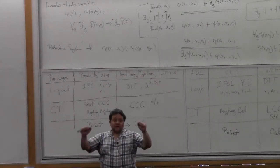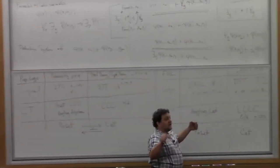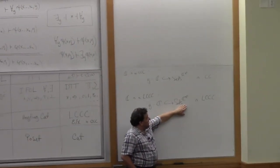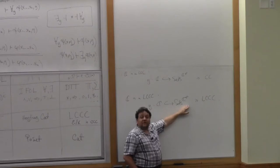It preserves the locally Cartesian-closed structure. It preserves the interpretation of dependent type theory. This thing is a locally Cartesian-closed category, and this preserves the locally Cartesian-closed structure.